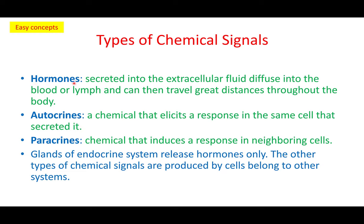Most endocrine glands produce hormones. The way hormones affect cells can be one of two ways. In the autocrine mechanism, the cell produces the hormone and that hormone affects the same cell — it's a kind of self-activation. So the target cell is the same cell that secretes the hormone.